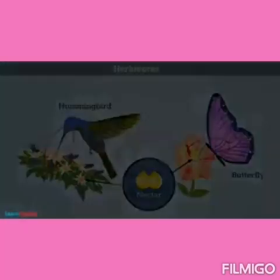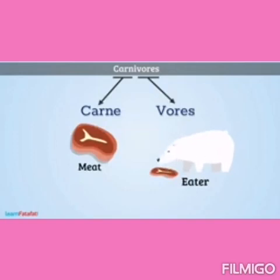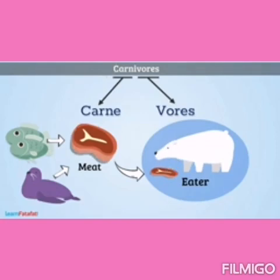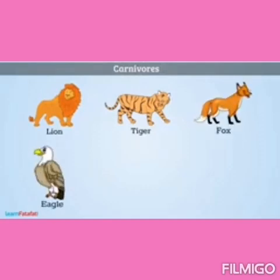Carnivores. 'Carn' means meat and 'vores' means eater. The animals which obtain their food only from other animals, i.e., in the form of meat, are called carnivores. Examples include lion, tiger, fox, eagle, snake, spider, shark, etc.